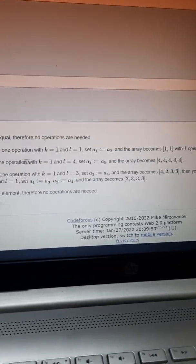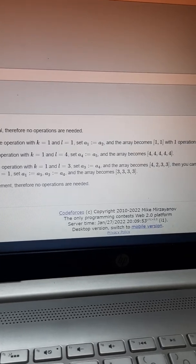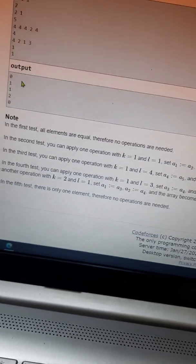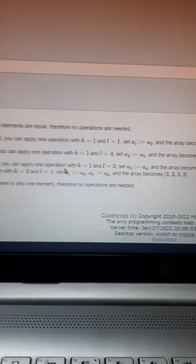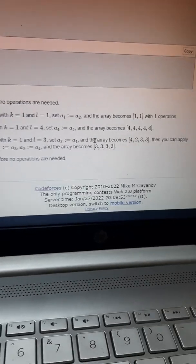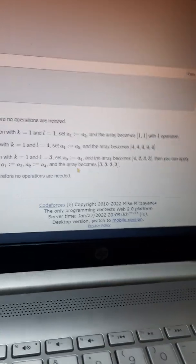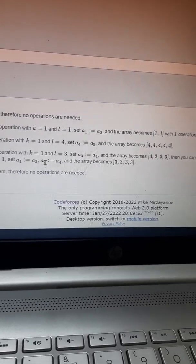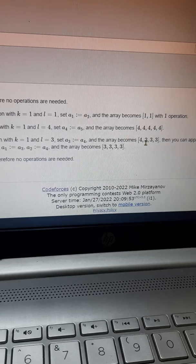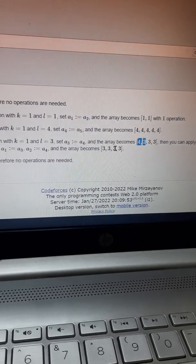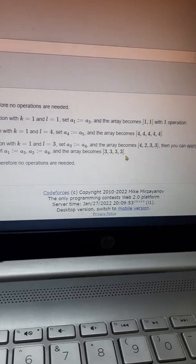The third test case: you can apply one operation with k equal to 1 and l equal to 4, such that a[3] equals a[4], so the array becomes [4, 2, 3, 3]. Then you can apply k equal to 1 and l equal to 3, such that a[1] becomes a[3] and a[2] becomes a[4], which equals 3. So we have performed this operation two times, so the output is 2.